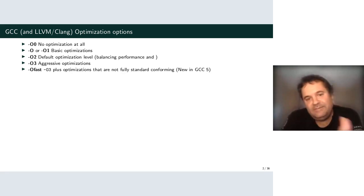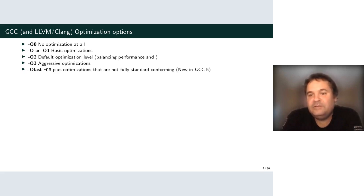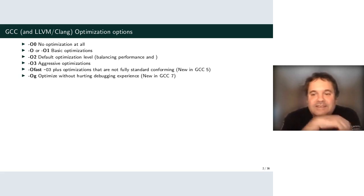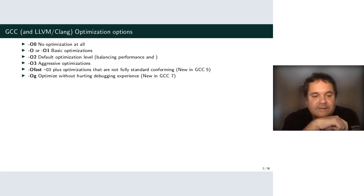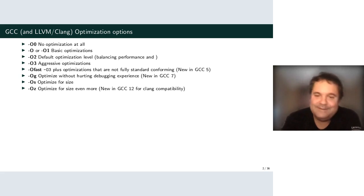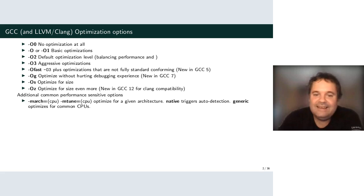Since the 90s, new optimization levels were added. We have Ofast, which takes O3 and enables some non-conforming options useful for improving floating point performance. We have Og, added in GCC 7, which is like O0 but with some optimizations enabled — useful for C++ programs with high abstraction penalty that are too slow at O0 to use. Then we have Os for size optimization, and recently in GCC 12 we added Oz, which is like Os but optimizes even slightly more.